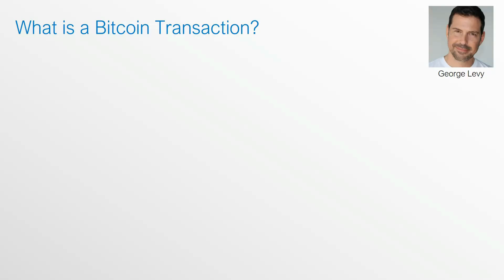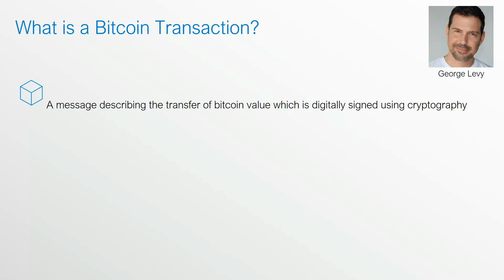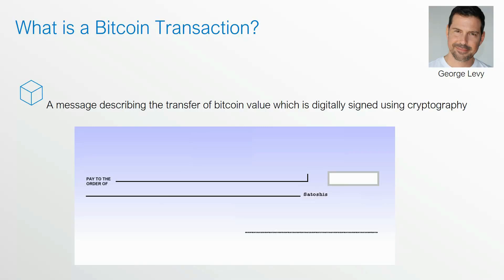To do so, we first need to understand what a Bitcoin transaction is. A Bitcoin transaction is nothing more than a message which describes the transfer of Bitcoin value, and that message is digitally signed using cryptography. Think of a Bitcoin transaction very similar to a check. A Bitcoin transaction has three primary pieces you need to be aware of, and I'm using the image of the check to make things a little bit clearer.